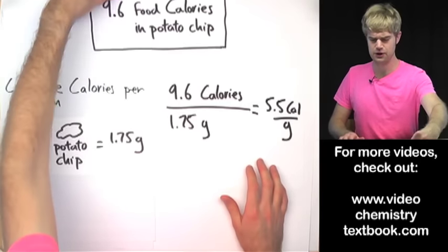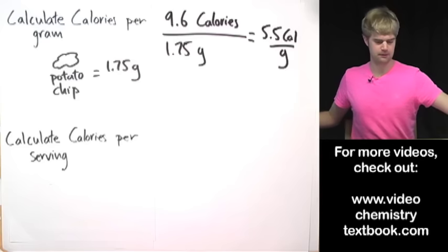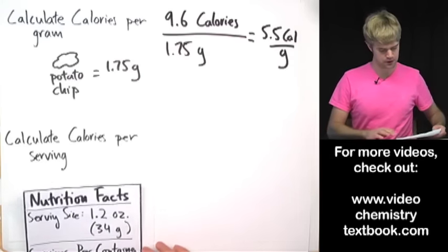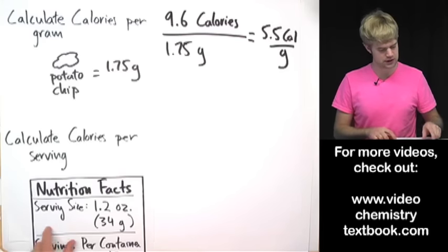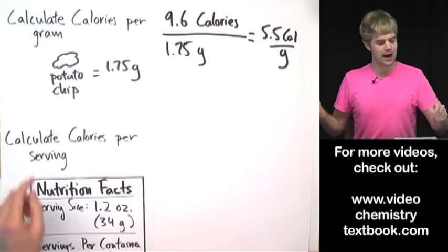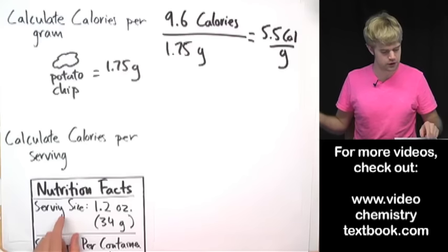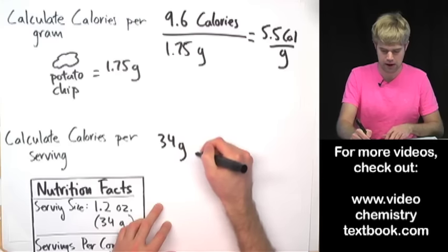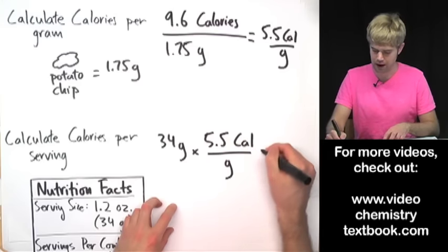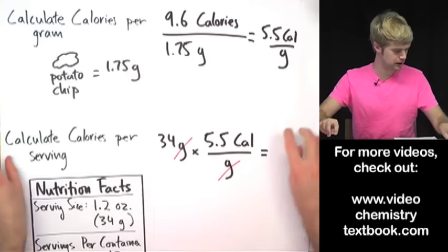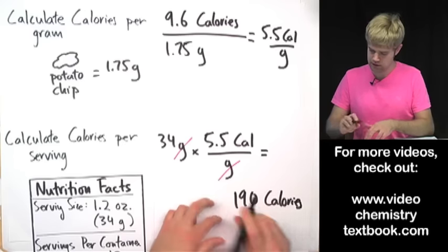Now using the calories-per-gram value, we can calculate calories per serving. Looking at the back of the potato chip package, the nutrition facts say the serving size is 34 grams. We multiply the serving size — 34 grams — by our calories per gram — 5.5 calories per gram. The grams cancel, and 34 times 5.5 gives us 190 calories in one serving.